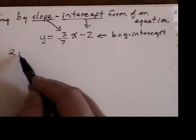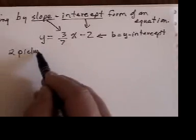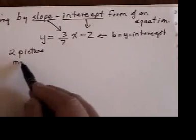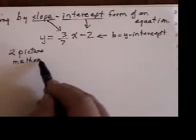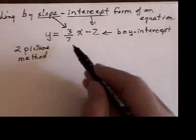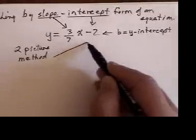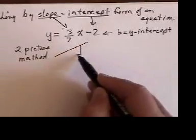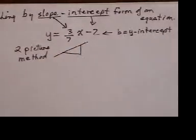Now I call this the two-picture method. So the two-picture method, I first of all draw a picture of what a positive slope looks like. I put my triangle underneath the line always.